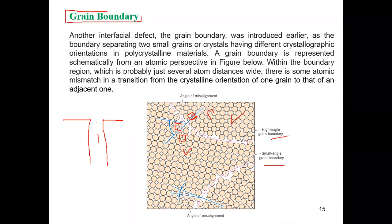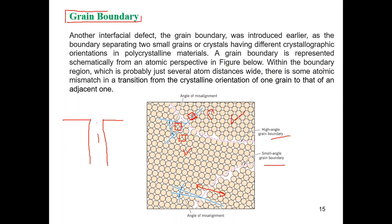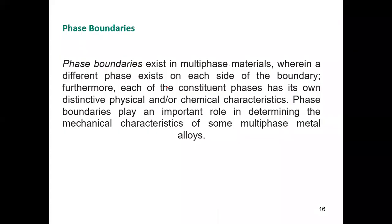A grain boundary is represented schematically from an atomic perspective. In the boundary region, which is probably just several atom distances wide, there is some atomic mismatch in a transition from the crystalline orientation of one grain to that of the adjacent one.